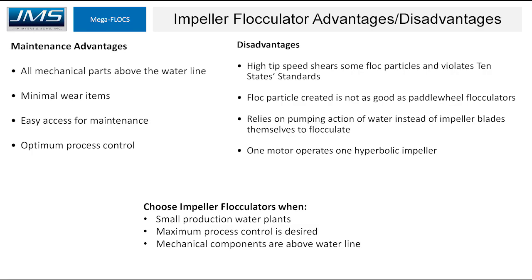Some advantages of impeller flocculators are that all mechanical parts are above the water, minimal wear items, easy access for maintenance, and you can control the speed of each unit. Disadvantages are that high shear zones violate the Ten State Standards, the floc is not as high quality, and it relies on the pumping action of the blades rather than the blades themselves. One motor operates one unit, which doesn't spread gearbox cost. These are ideal for small production water plants where maximum speed control is needed and all mechanical components must be above the water line.